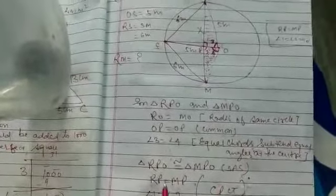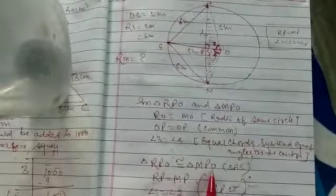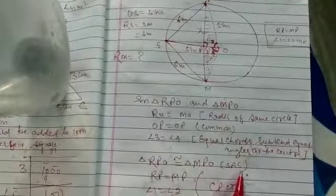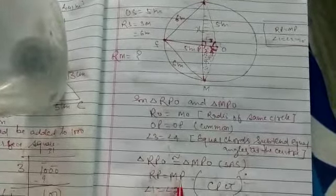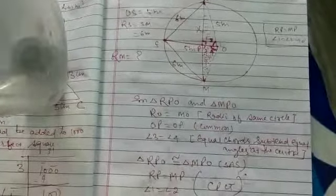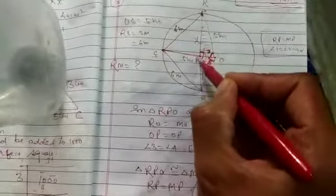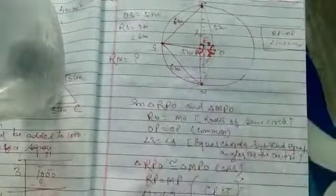Therefore, triangle RPO is congruent to triangle MPO by SAS congruency. तो इसका मतलब R, P equals M, P और angle 1 equals angle 2।